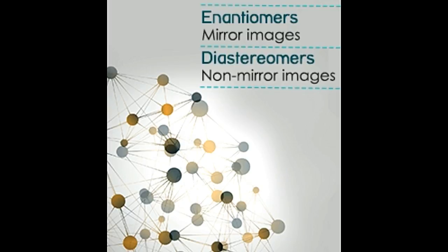Depending on the spatial arrangement of the atoms of the molecules, stereoisomers can be of many types like enantiomers, diastereomers, conformers, and atropisomers. We will talk about enantiomers and diastereomers in detail here.